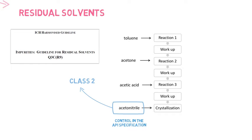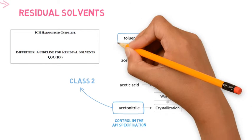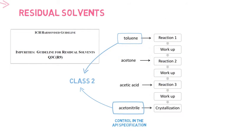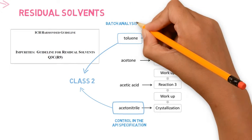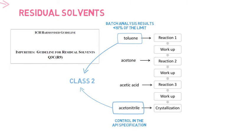Class 2 solvents used in the final stages will usually need to be controlled in the API specification, but those used in initial stages may have their control exempted, in case batch analysis results demonstrate their levels are below 10% of the acceptable limit.